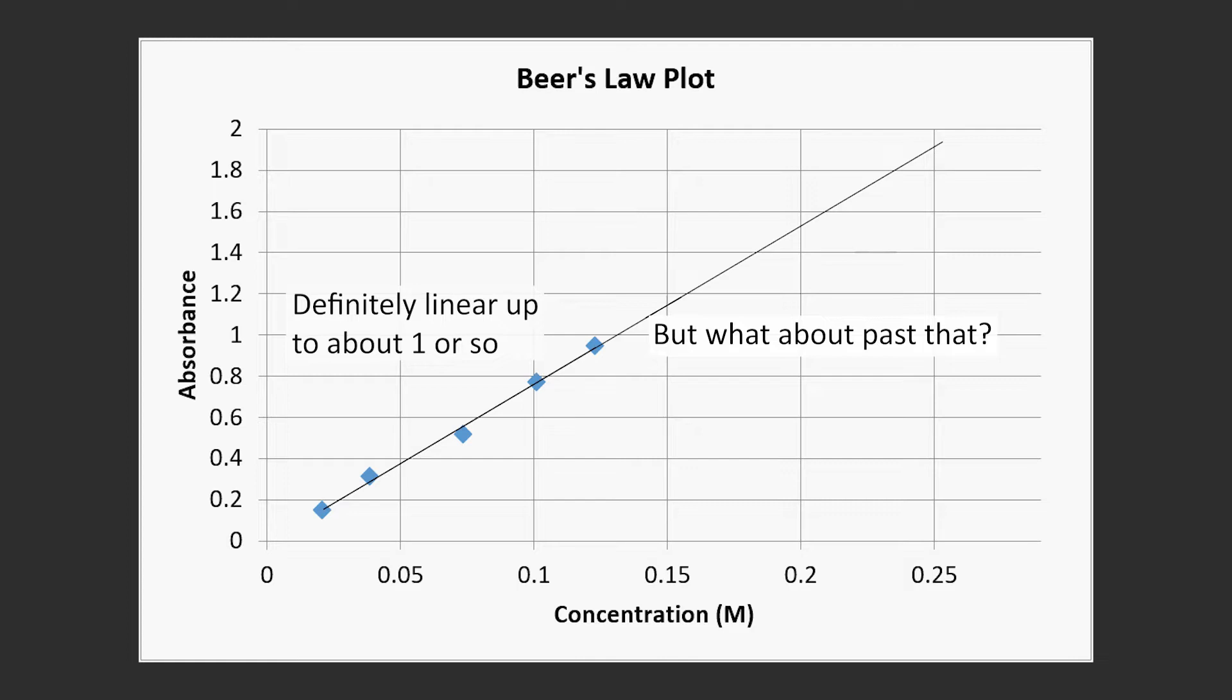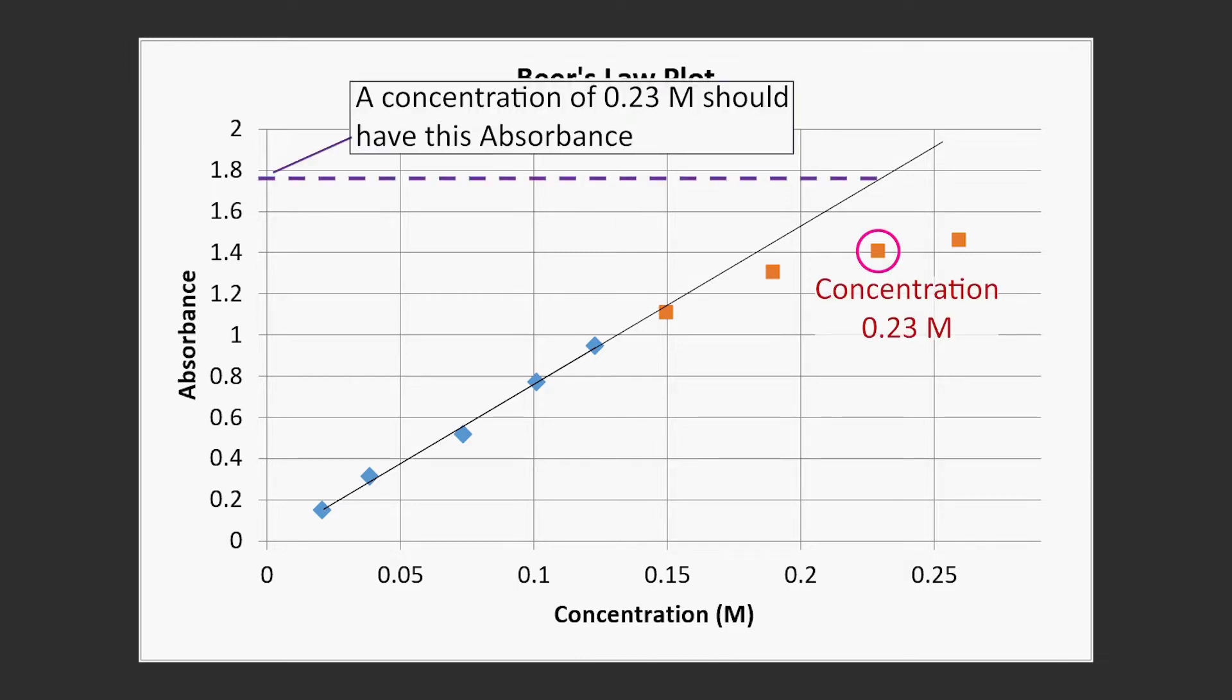See, as a solution's concentration increases to somewhere past an absorbance of 1, the absorbances we measure begin to diverge from a linear line. For the example shown in this graph, if we tried to measure a solution with a concentration of .23, we should theoretically get an absorbance of 1.76 or so.